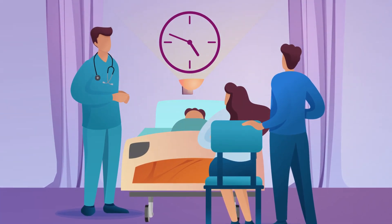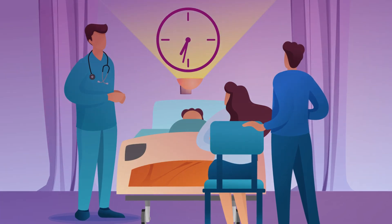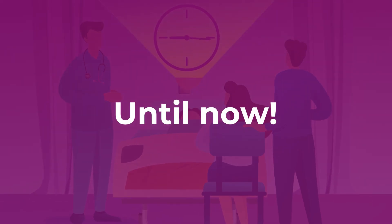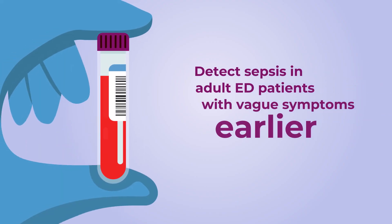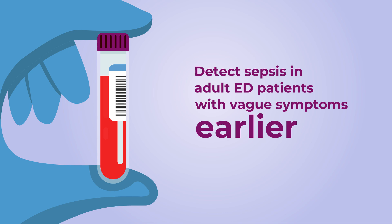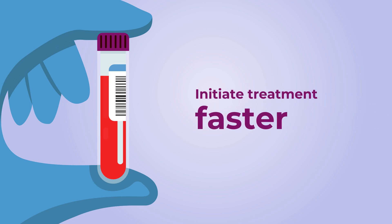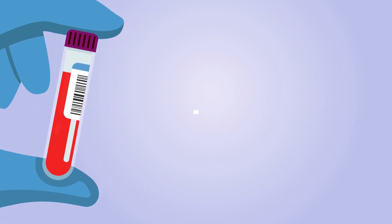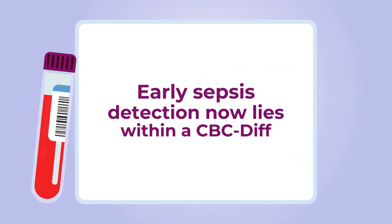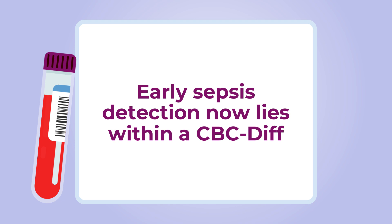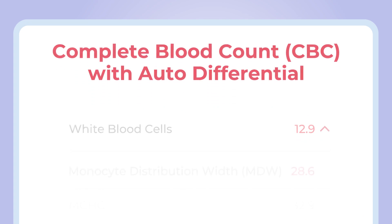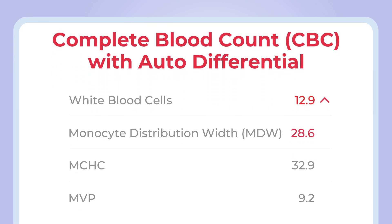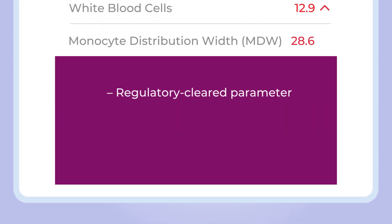It is in these symptom presentations that the risk of sepsis can be extremely difficult to identify and start timely treatment — until now. Clinicians can now detect or screen for sepsis with the very first blood draw in adult patients presenting vague symptoms, and initiate life-saving treatment faster.